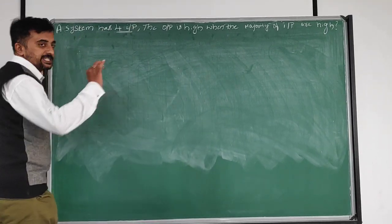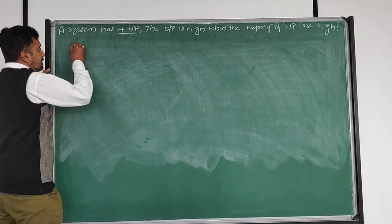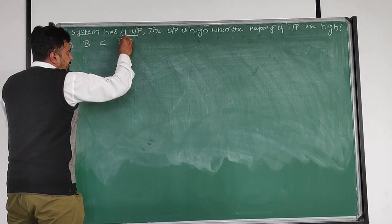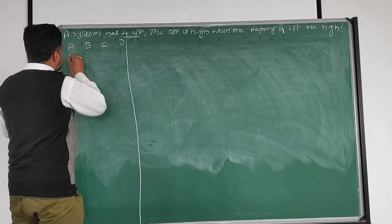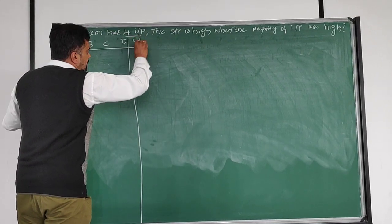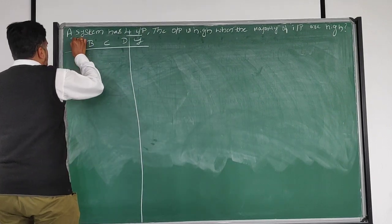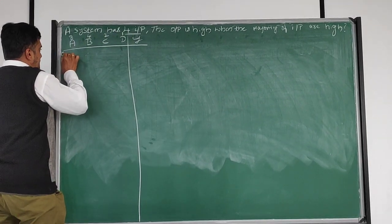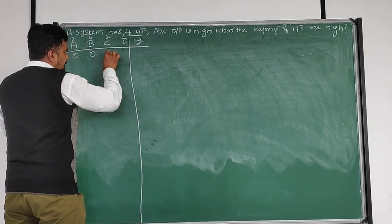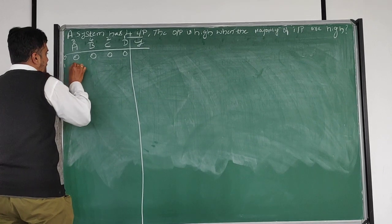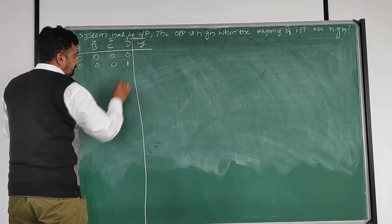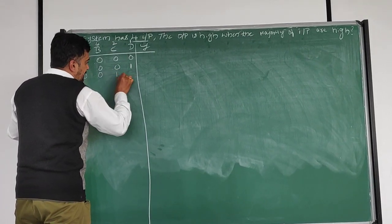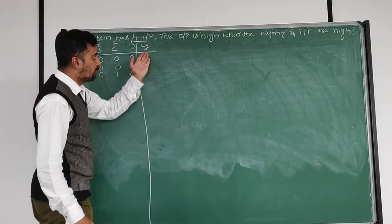So first, a system has four inputs. I will take A, B, C, D and make a truth table with output Y. Using the 8-4-2-1 method, we have to write values 0 to 15 and then go for the output. We have to write 0 to 15 and then determine the output.